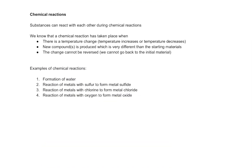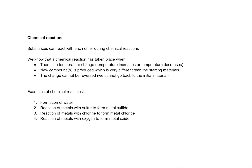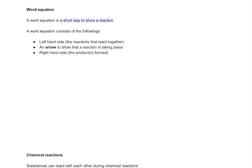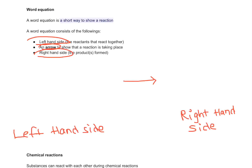So, word equation. A word equation is a short way to show that a reaction is taking place. In a word equation there are three components: there's the left hand side, there's an arrow, and there's the right hand side. You have here the left hand side of the arrow, and here the right hand side of the arrow.